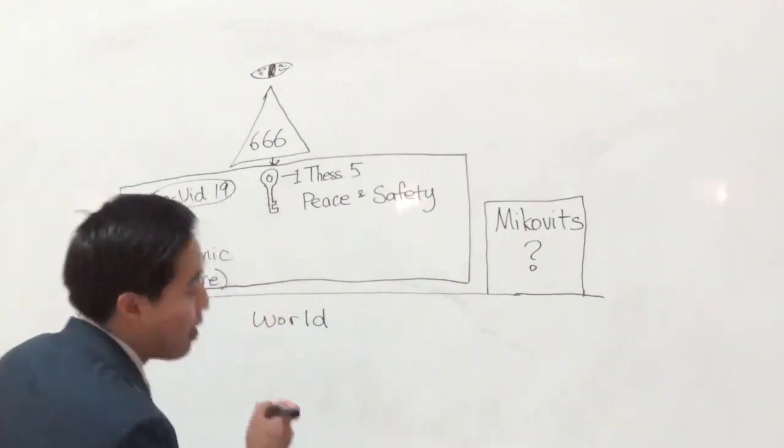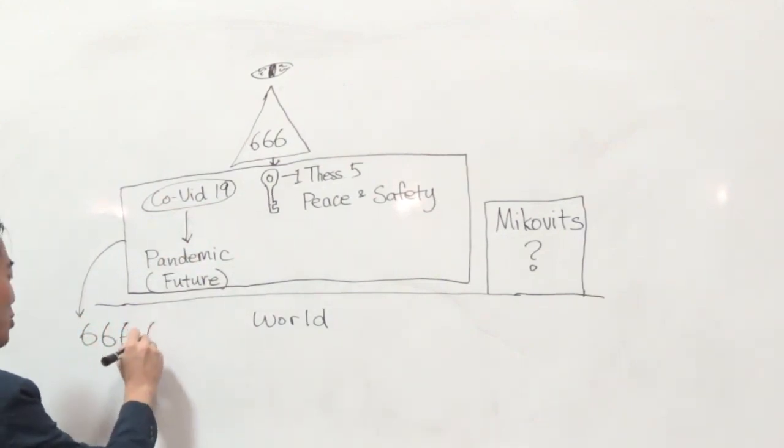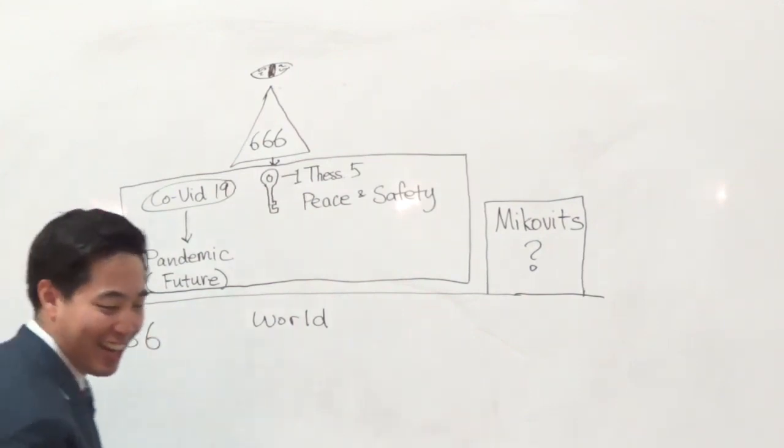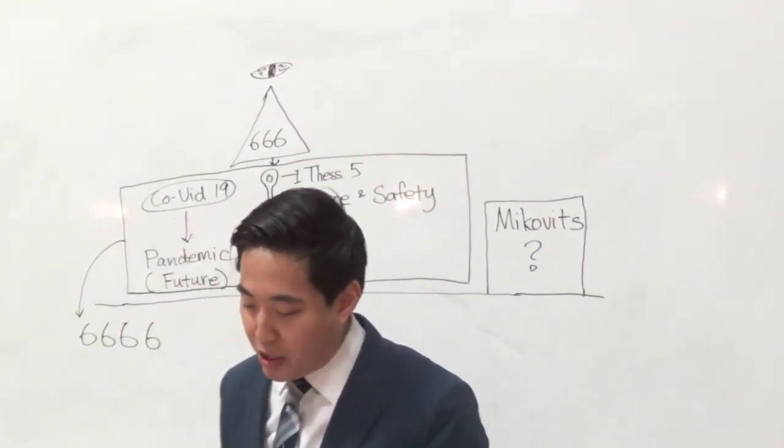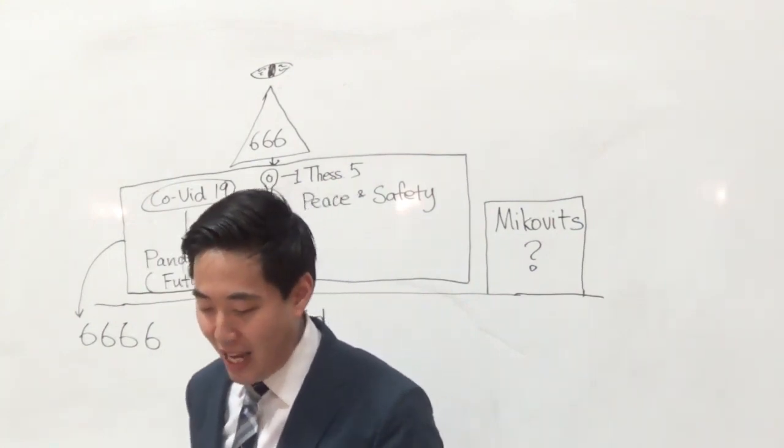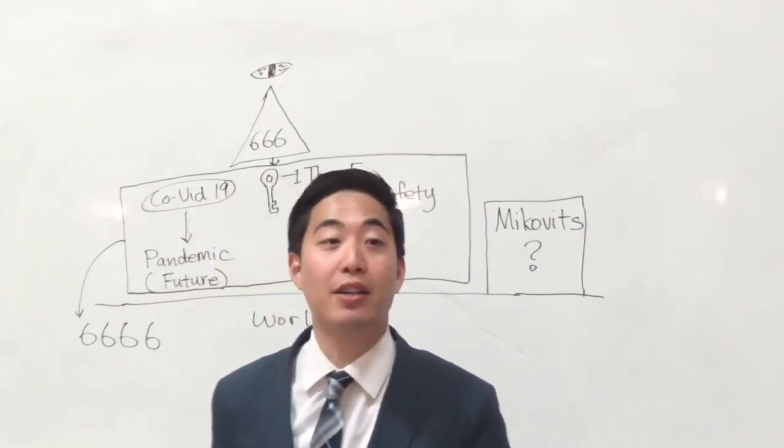Now, Congress passed out a bill, which we all know. HR 6666. This is not a good number, right? It is - you can look at congress.gov. It's called COVID-19 Testing, Reaching and Contacting Everyone, TRACE Act. What is kind of scary to me about the Congress where they passed out this bill is that because of this rationale, then you can start doing this.